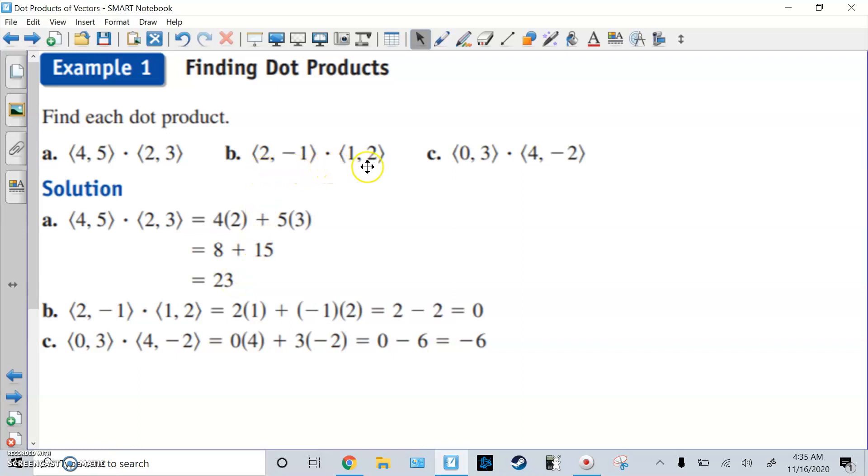Here, 2 negative 1 times 1, 2. 2 times 1 is 2. Negative 1 times 2 is negative 2. 2 plus negative 2, meaning 2 minus 2 is 0. And then here, 0, 3 times 4, negative 2. Do the first times first, last times last. So we're not really foiling. It's just first part times first part, last part and last part. And you get negative 6. Alright, so notice you can get a positive, negative, and 0 when doing a dot product.